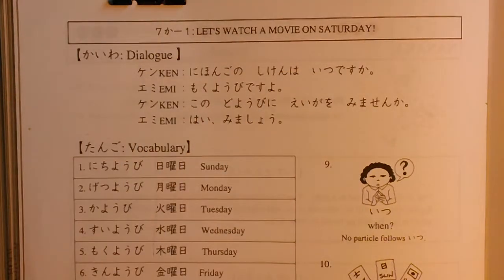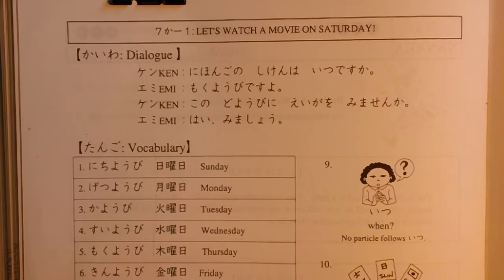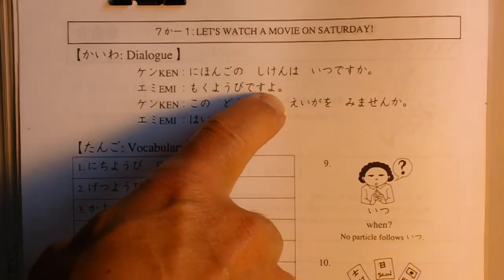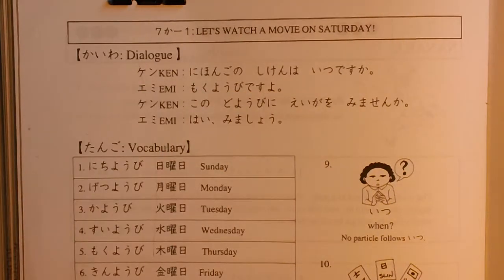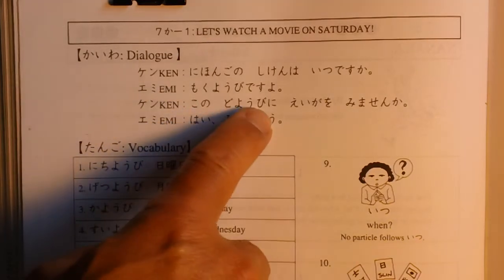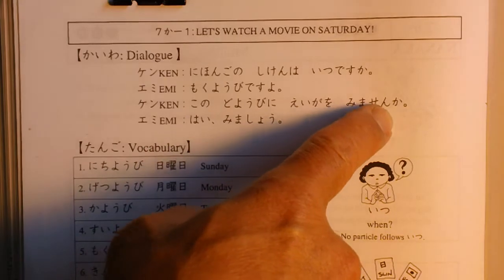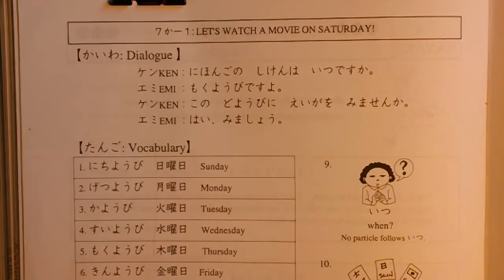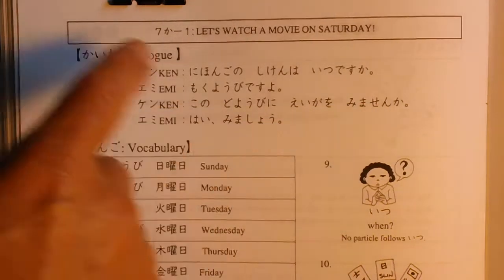日本語の試験はいつですか? — When is the Japanese exam? Do you know 試験? 木曜日ですよ。— It's Thursday. Do you know the usage of よ? この木曜日に... あ、この土曜日に映画を見ませんか? — Won't you watch a movie this Saturday? はい、見ましょう。 — Yes, let's watch.